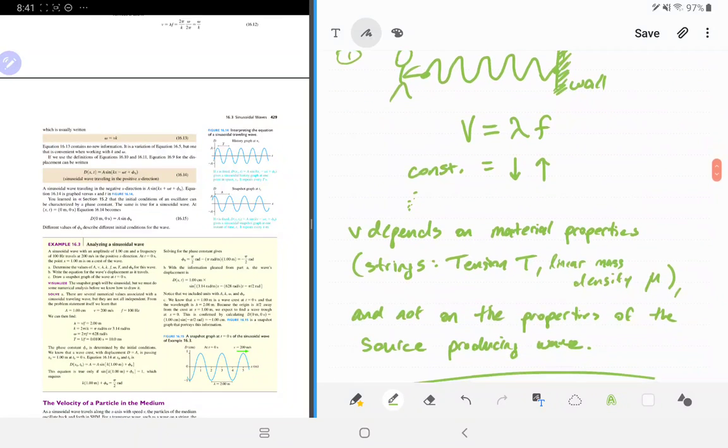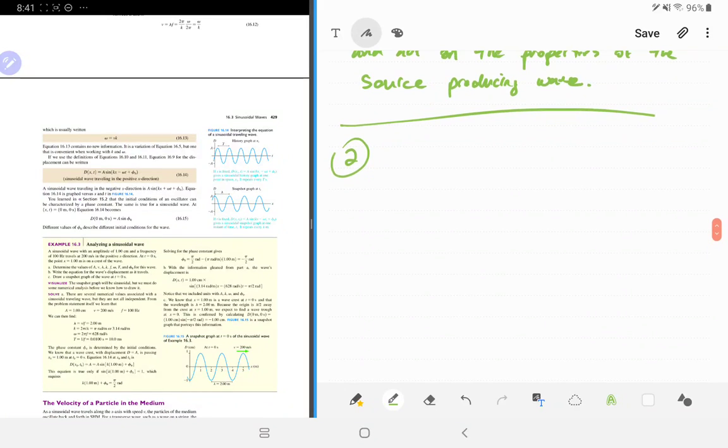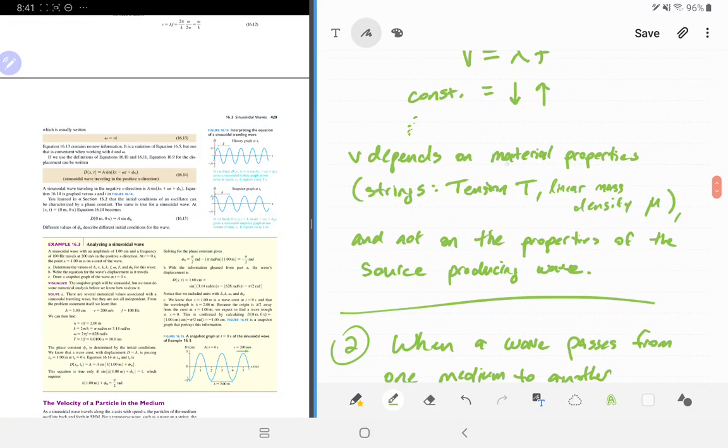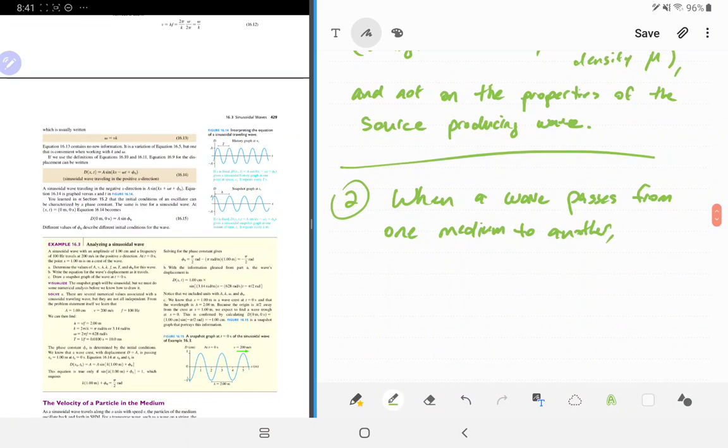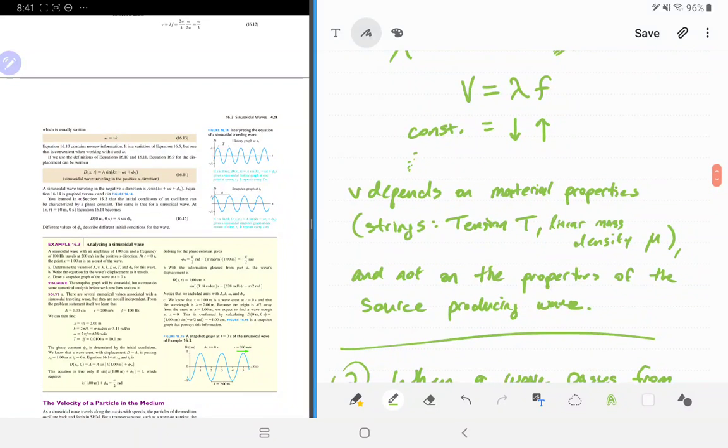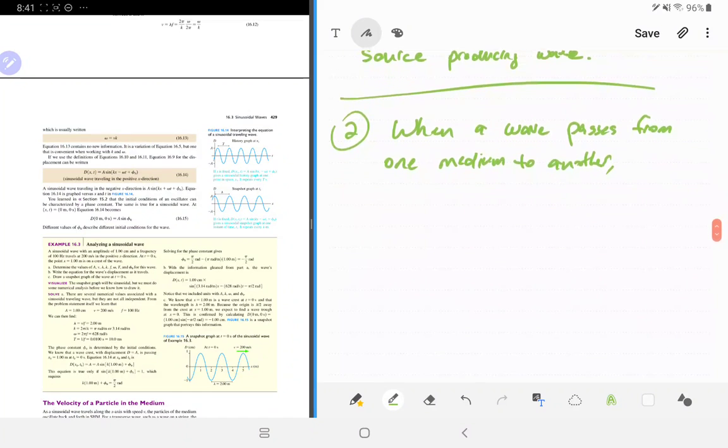The second fact I want to get out of the way right away is when a wave passes from one medium to another, the wave speed could change. If it depends on the material properties and we're changing the material then the wave speed could definitely change. You might think well if the wave speed can change and maybe the wavelength and the frequency could change too, how are we going to get a handle on things? It turns out that the frequency is going to be constant. The frequency of the wave doesn't change.